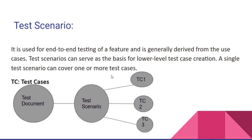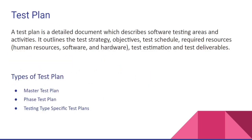This is the test plan. In product or service-based companies, the maximum QA lead or higher authority creates the test plans — the test strategy, what the requirements are, what the estimation time is, and the deliverables. We have three types of test plans: Master test plan, phase test plan, and testing-type-specific test plan.